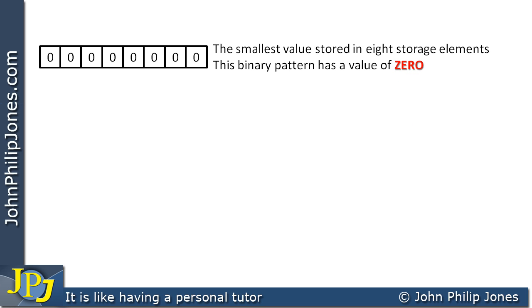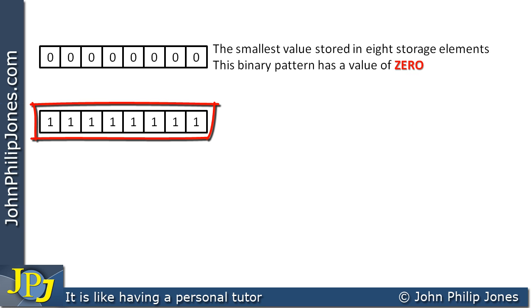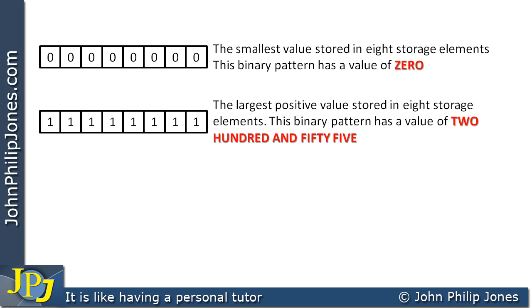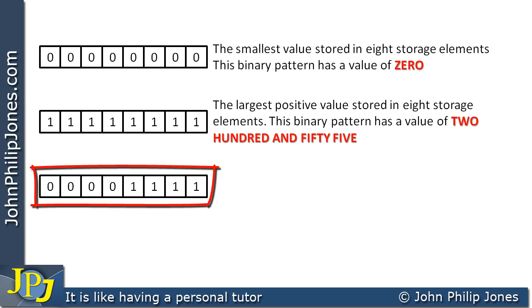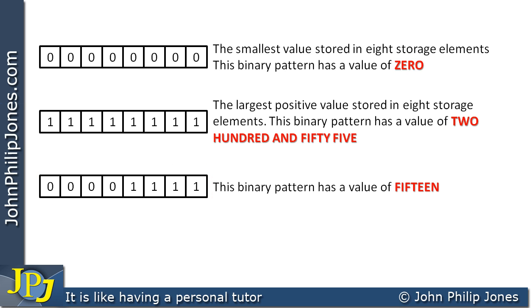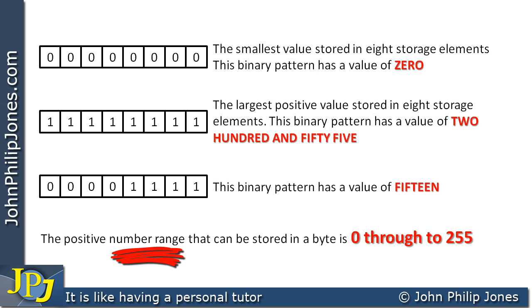If we now have a look at what happens when we store all ones within these storage elements, then in fact this gives us 255. So the largest positive value we can store in eight storage elements is 255. If I now have a look at another combination of ones and zeros, what we can now see is that this has the value of 15. This means that the number range available in eight storage elements is from zero to 255, where zero is the smallest value and 255 is the biggest value.